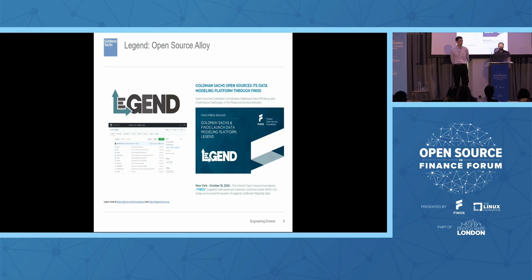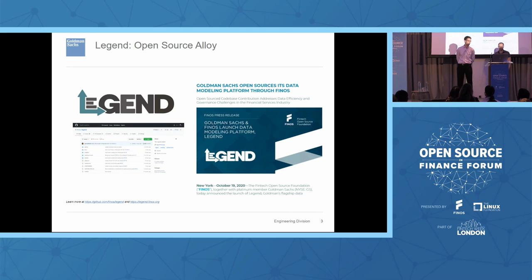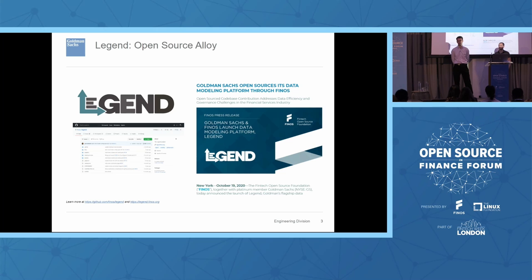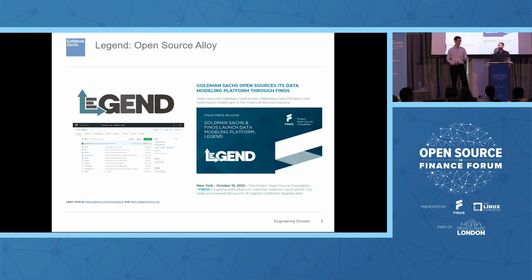Before we dive into the main part of the talk today, we just wanted to give some background for those less familiar with Legend. Legend is a project that we open-sourced through Finos back in October 2020. One of the goals was to open-source technology we'd used within our own internal data platforms for a number of years. Internally, those products are known as Alloy or Pure — if I use those names, they're largely interchangeable.